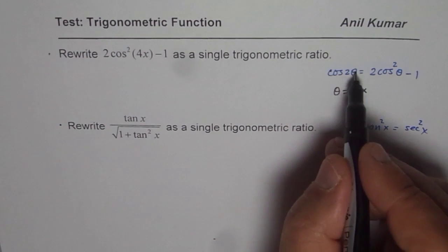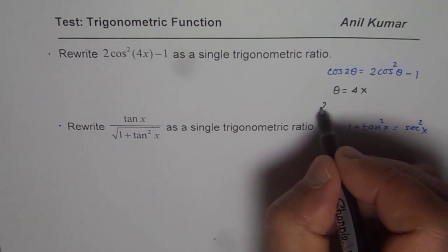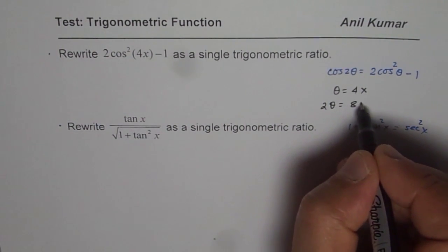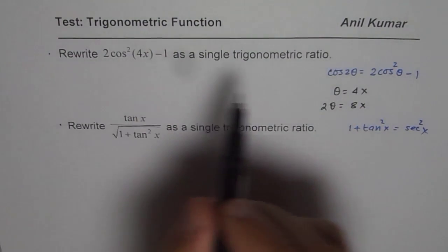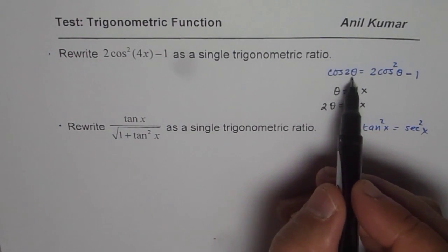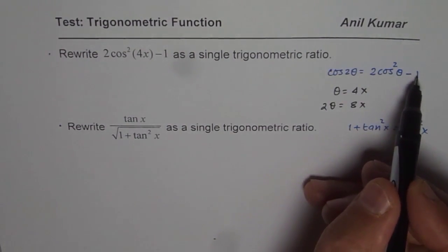So 2θ will be how much? 2θ will be equal to 8x. Do you see that? So we will apply this formula, which is cos 2θ = 2cos²θ - 1.